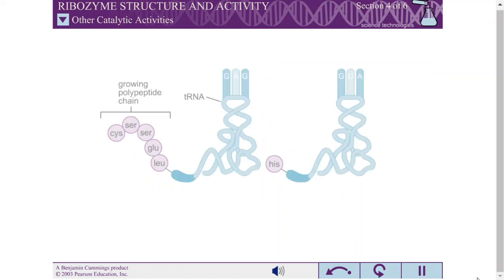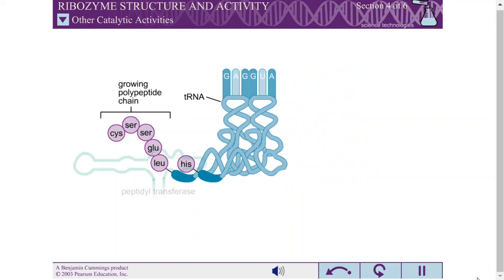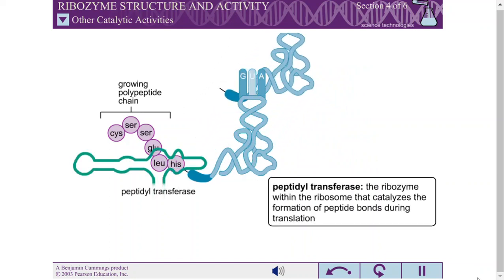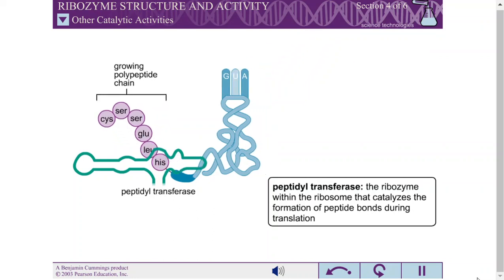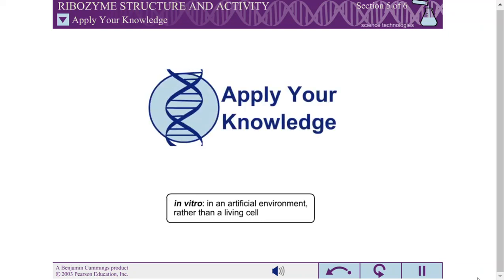Like the hammerhead, many of the known ribozymes are ribonucleases. However, ribozymes have been discovered with other activities. For example, the component of the ribosome that is responsible for the formation of the peptide bond, the peptidyl transferase, is a ribozyme. Researchers have used in vitro evolution to generate ribozymes that catalyze other reactions. In this exercise, you will explore some of the techniques used to evolve new ribozymes.